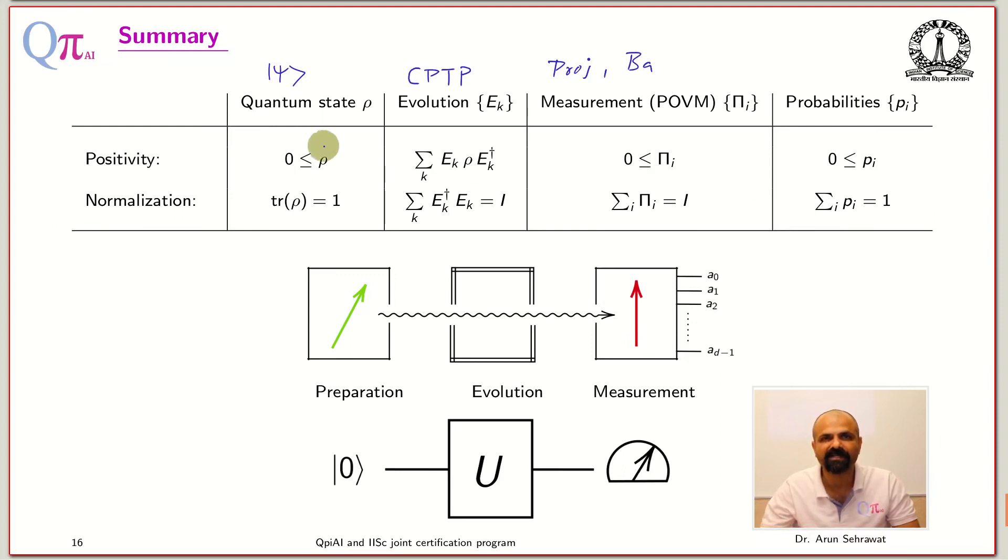These three are the basic postulates of quantum mechanics. For preparation you represent by ρ, for evolution you represent it by CPTP map, and measurement you represent it by a POVM. These are the three basic postulates of quantum mechanics for these three basic elements or procedures.